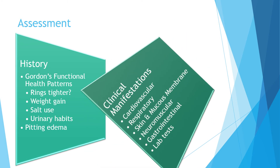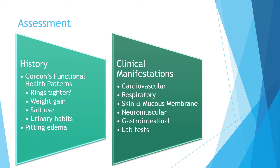Clinical manifestations of fluid overload are listed in Chart 13-6, page 179 of your textbook — review the chart. Cardiovascular signs include a bounding and increased pulse, increased blood pressure, and possible distended neck and hand veins. Respiratory changes include shallow respirations with an increased rate and potential crackles in the lungs on auscultation. Skin and mucous membranes will appear edematous, pale, and cool to the touch.